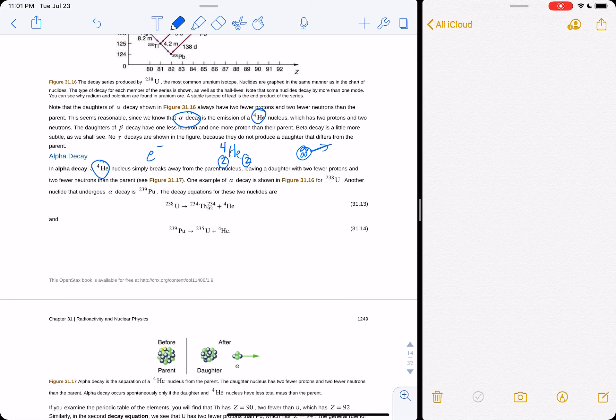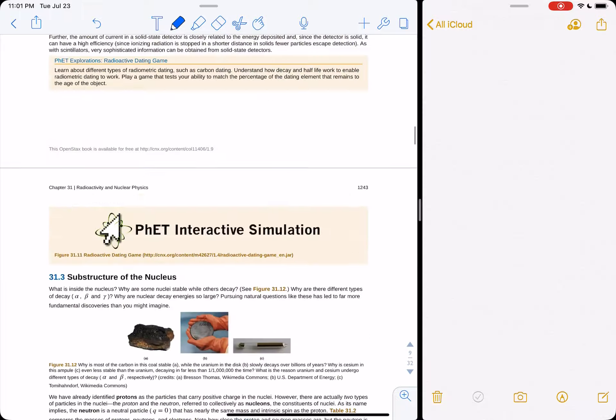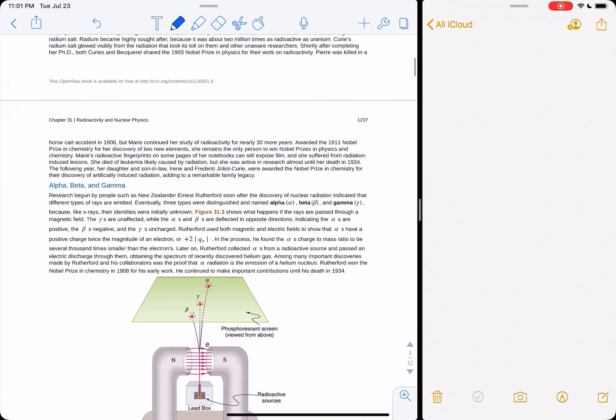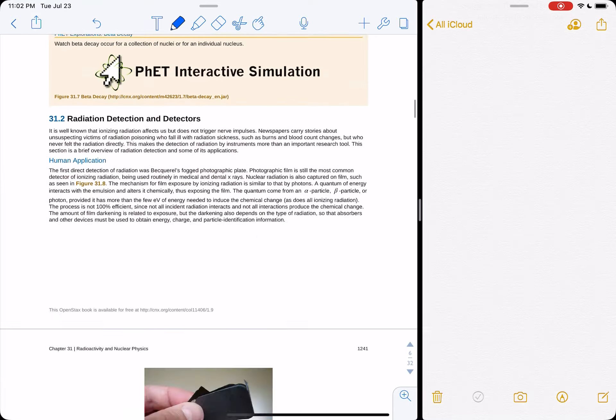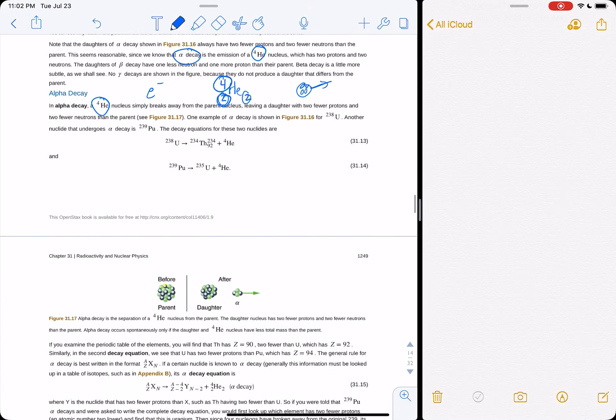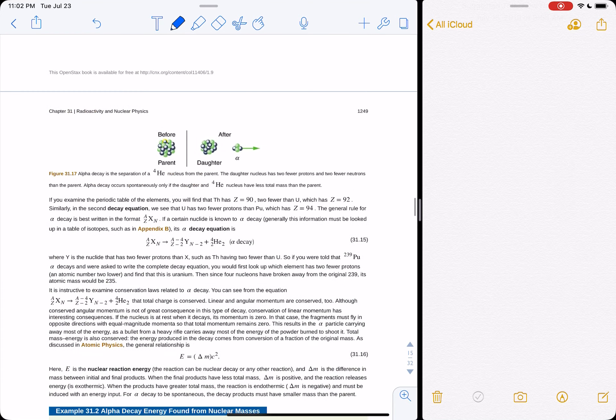So we're gonna take 238 minus 4, that gives us 234. It's gonna become thorium, because thorium is going to be 2 protons less than uranium. So if we go to our, there was a periodic table of the elements up here, I believe. No, is that in the other lecture? Shoot. Sorry. Okay, if, let's go fly-kite. Okay, let me pull this one up. We are in 31. Let's go to here. Now, wait a second. I was pretty sure I saw a periodic table. There we go.